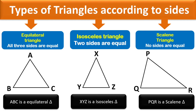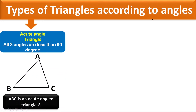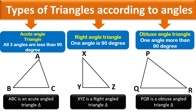Scalene triangle: in this triangle, all three sides are of different lengths, so PQR is a scalene triangle. Types of triangles according to angles: an acute angle triangle has all three angles less than 90 degrees. In a right-angled triangle, one angle is always 90 degrees. In an obtuse angle triangle, one angle is more than 90 degrees — PQR is an obtuse-angled triangle.